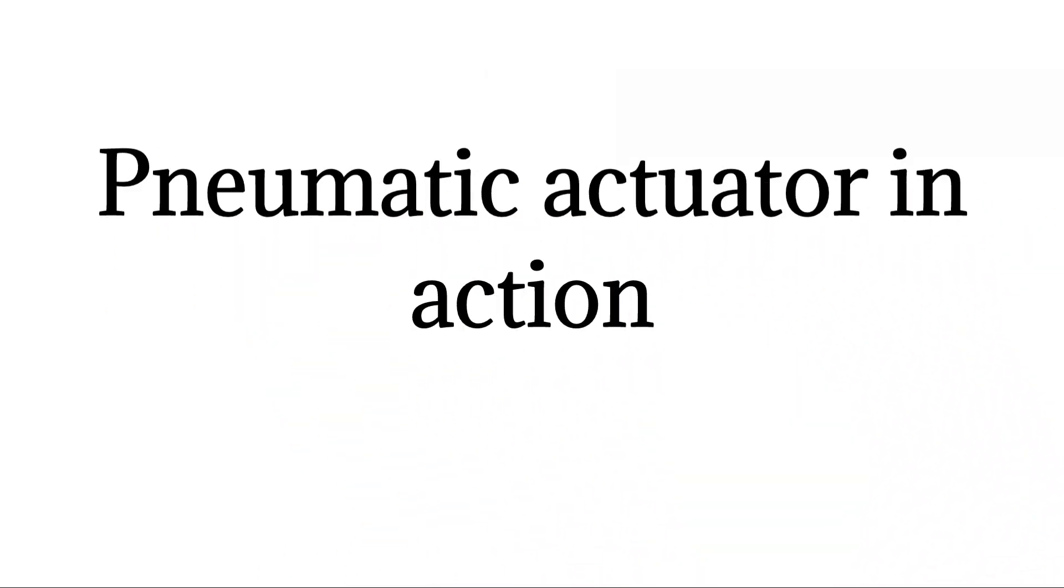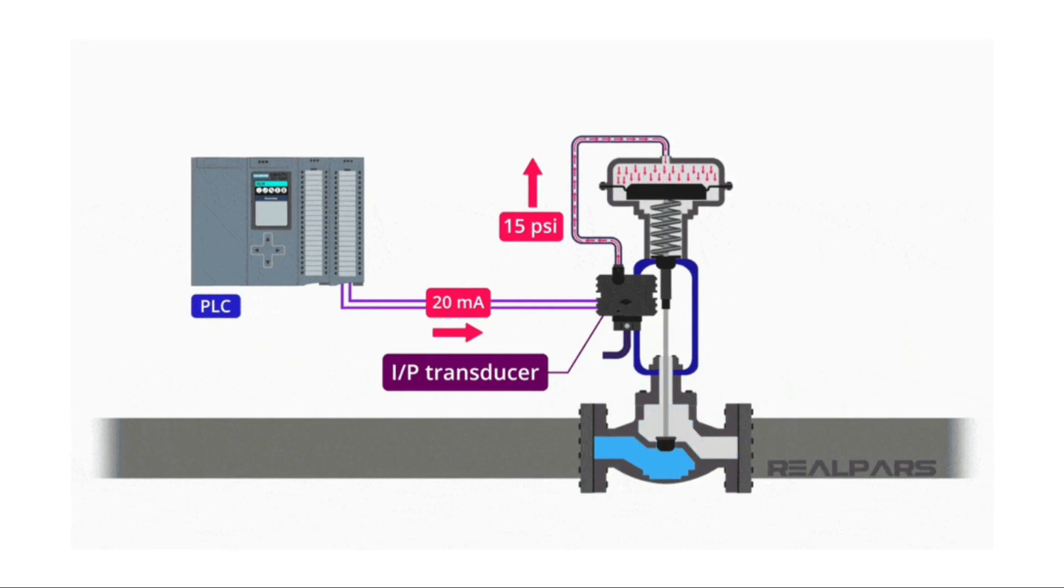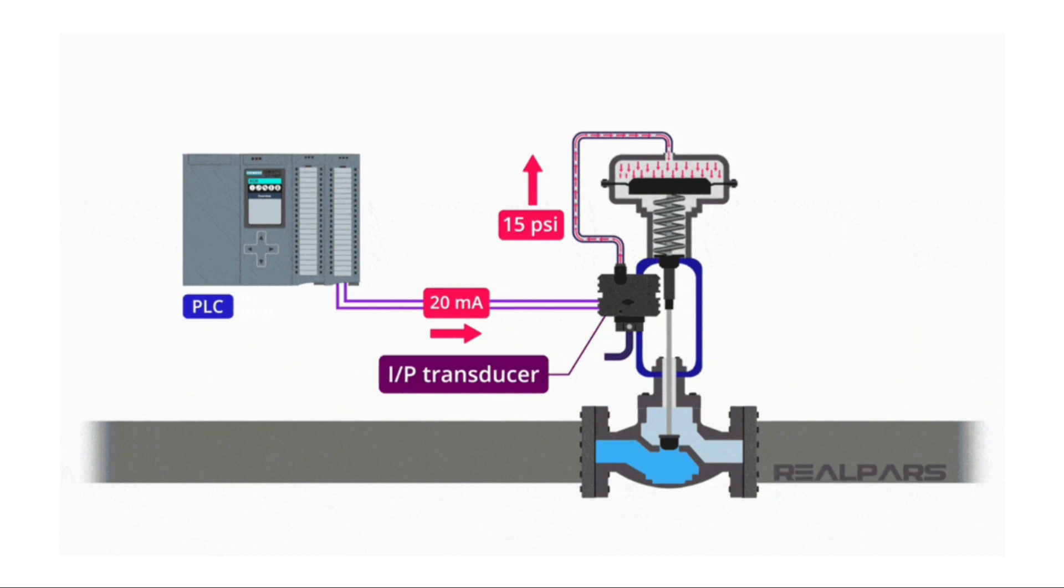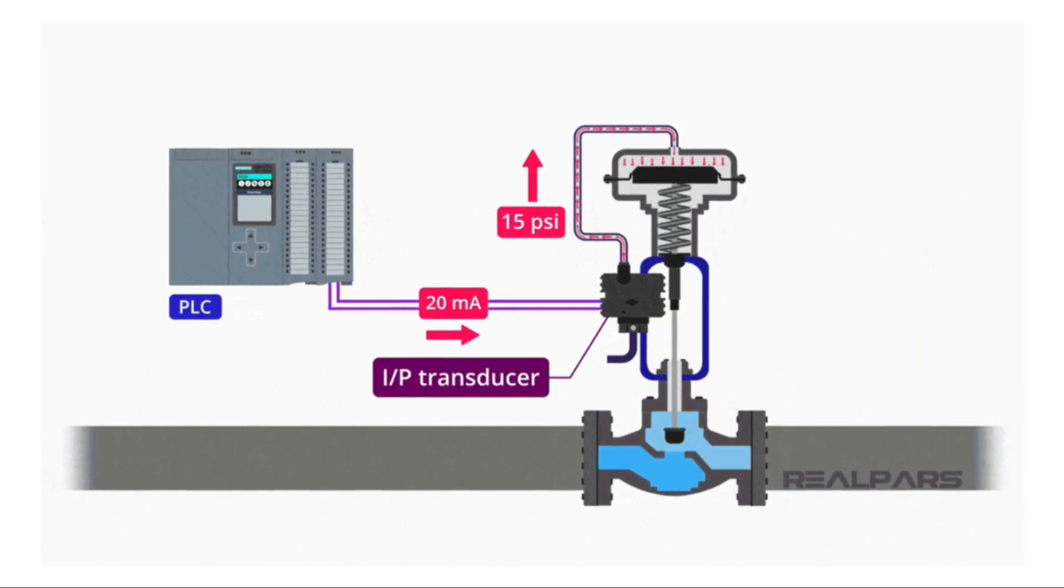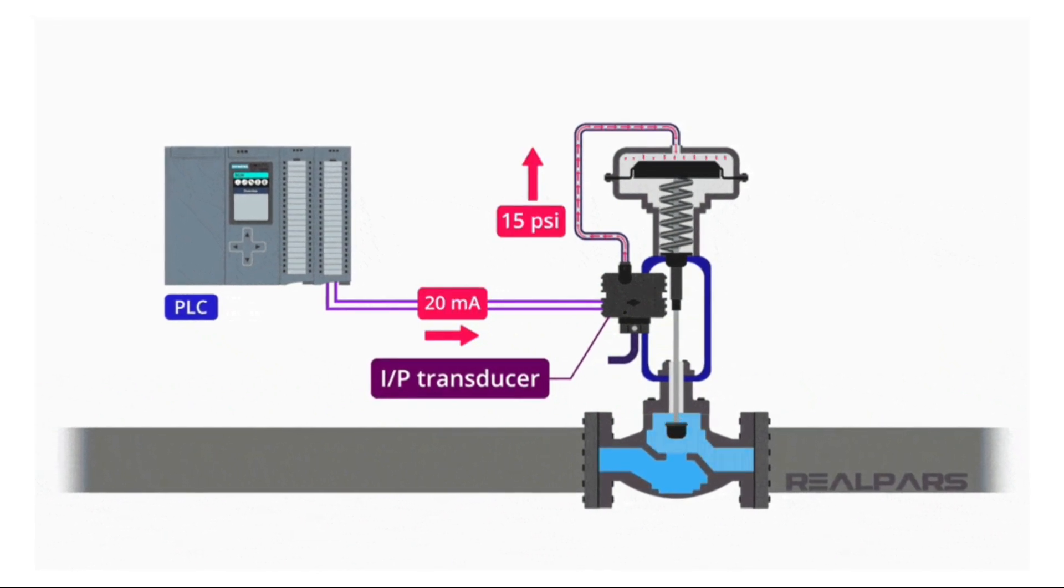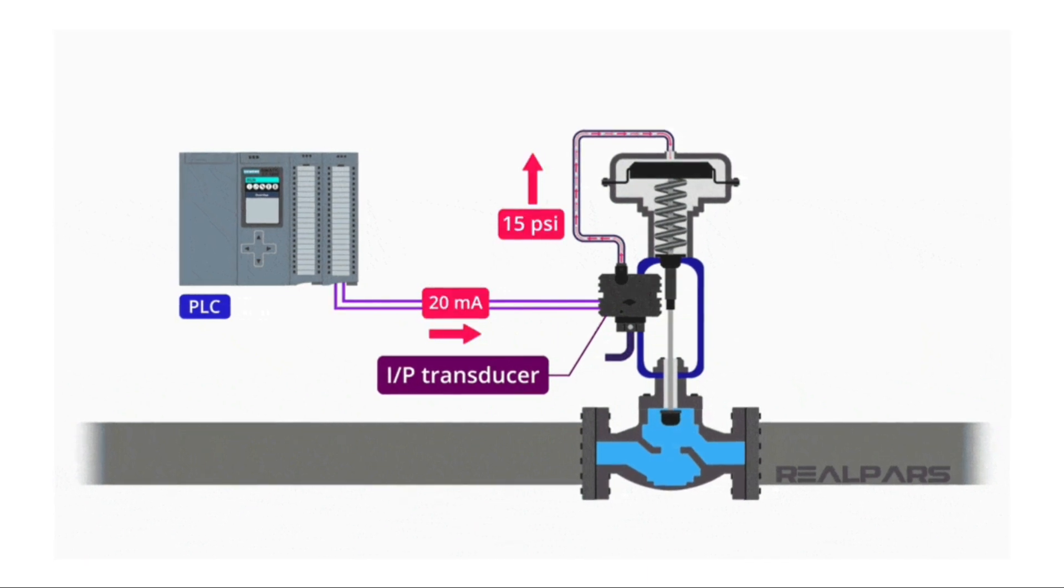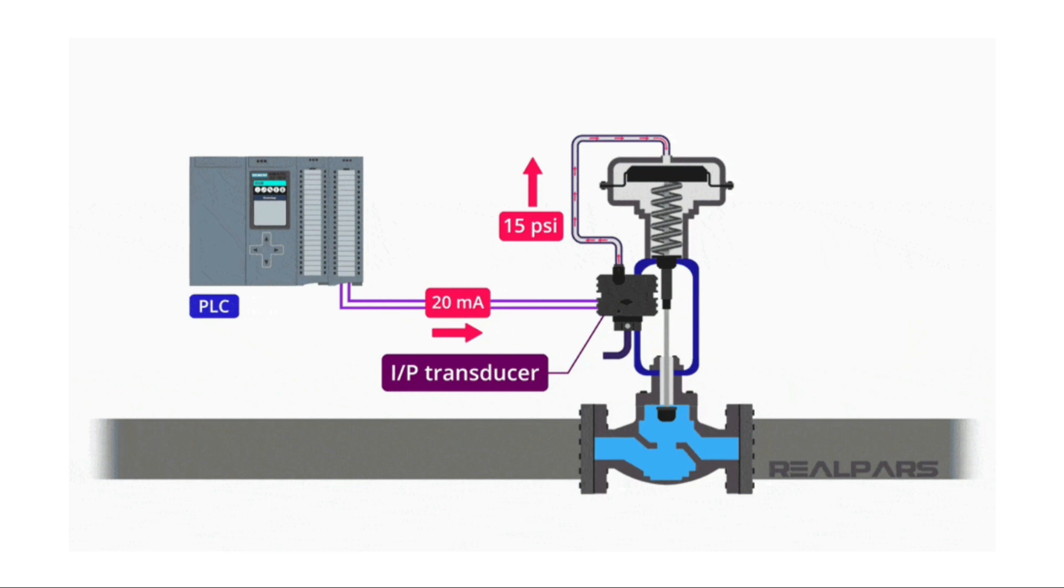Pneumatic actuator in action. Let's look at a typical spring diaphragm pneumatic actuator connected to a flow control valve in action. The PLC analog output card produces a 4 to 20 mA current to move the valve from fully open to fully closed. A signal conditioner called a current to pressure transducer will change the 4 to 20 mA into 3 to 15 psi.